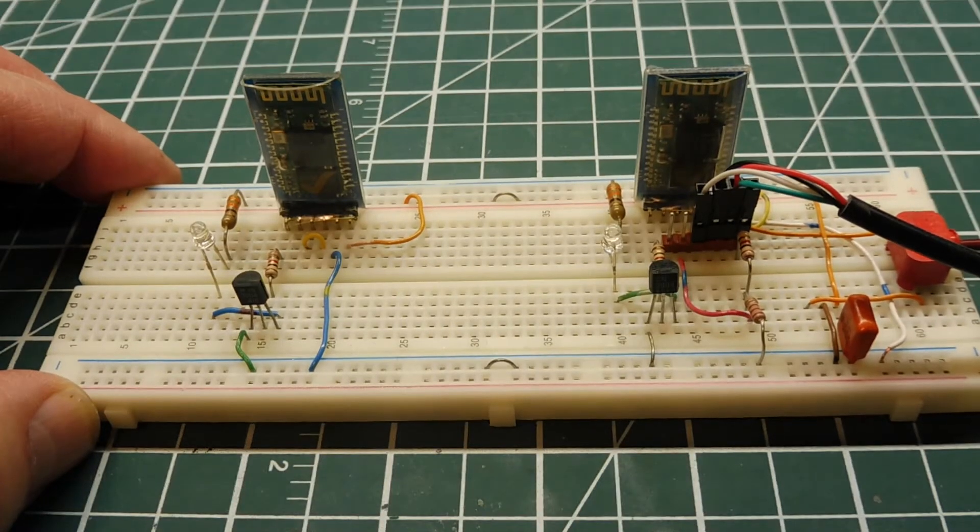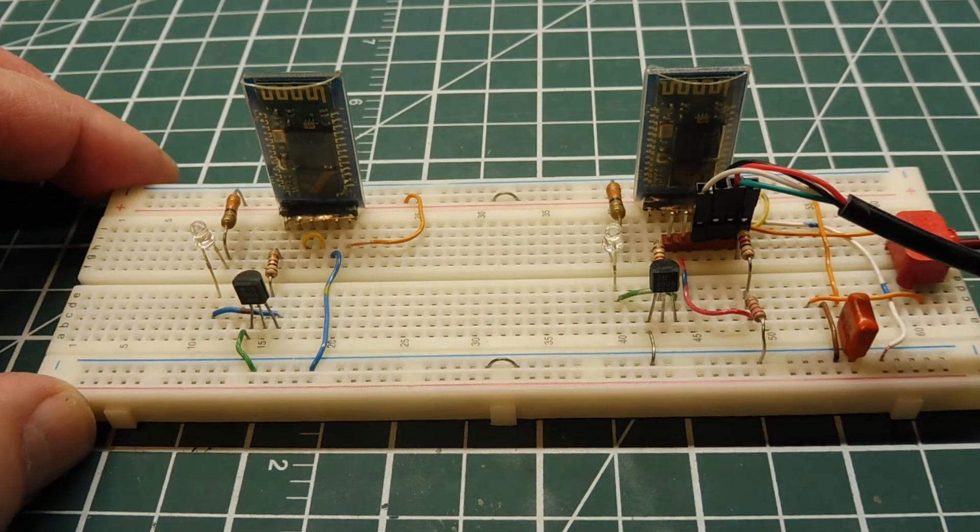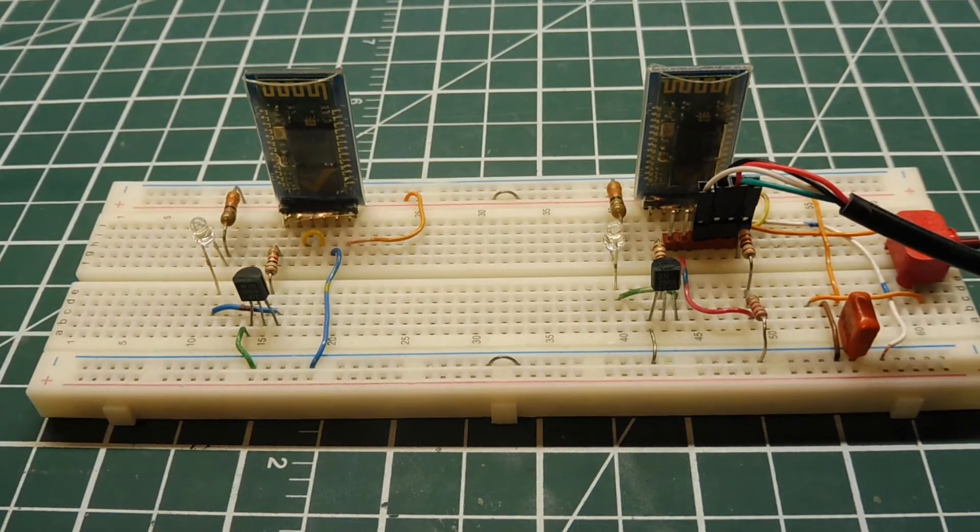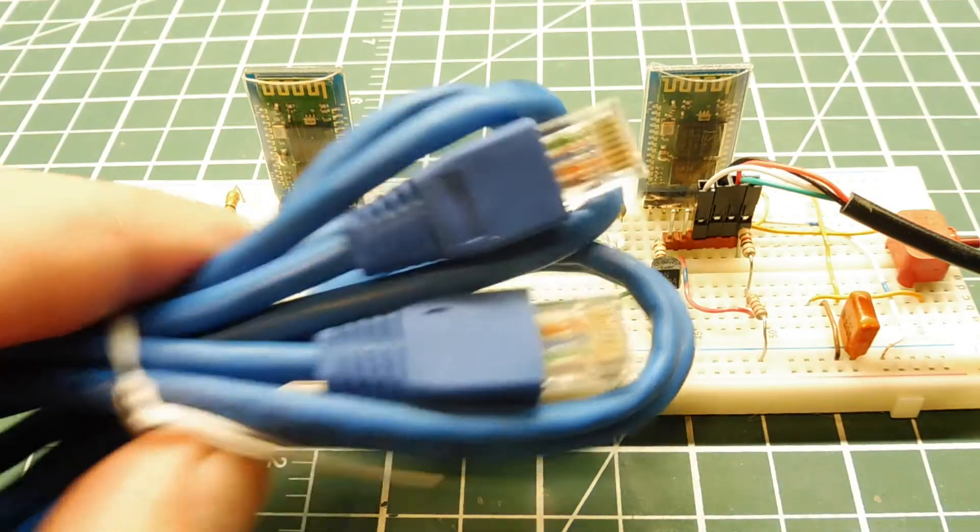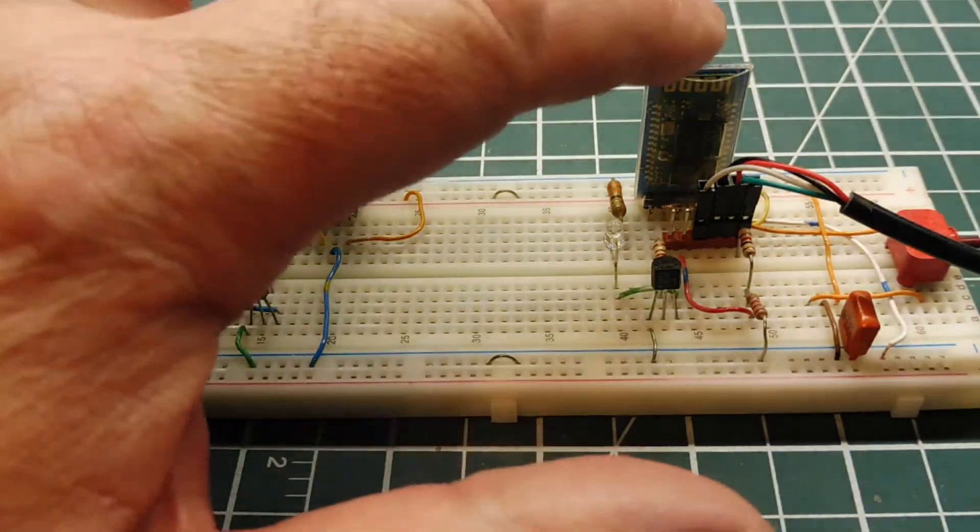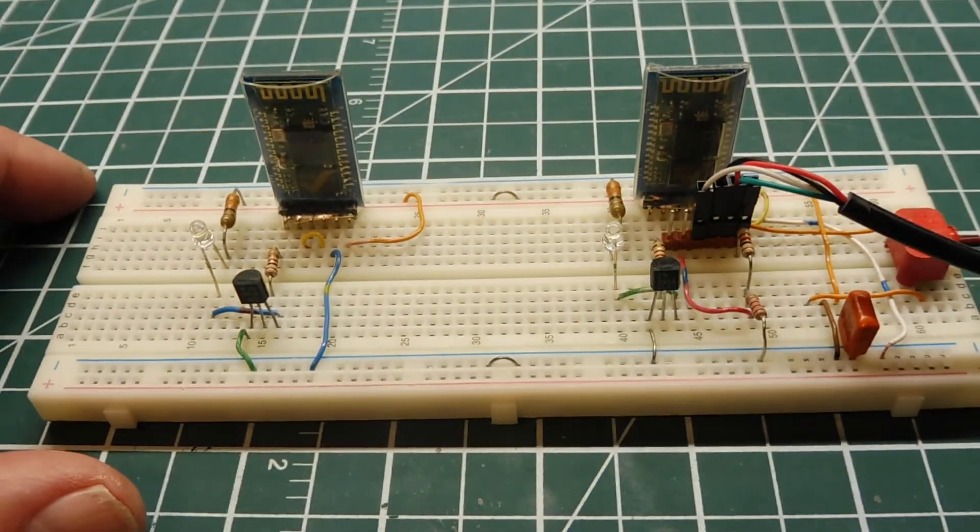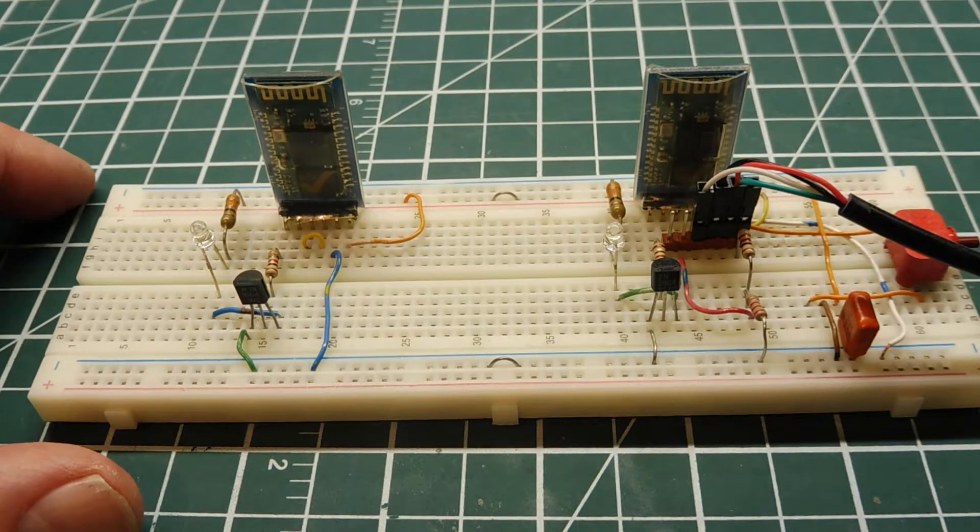Okay, in this video I want to talk about data error detection and data error correction. When we send data over a wire line like Ethernet, or over a radio link like these two Bluetooth modules, we want to ensure that the data sent is received with no errors.